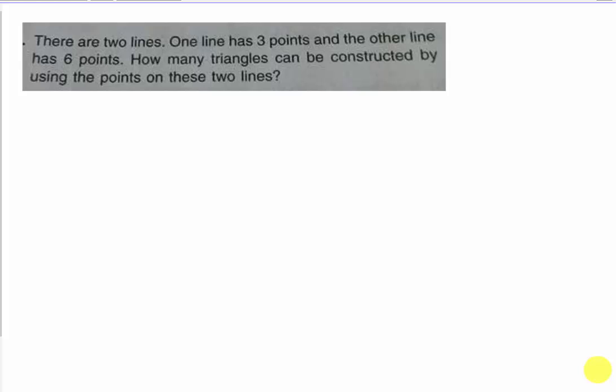Today I'm going to explain this question, which a teacher actually asked me. I find this question is a little bit uncommon — it may be one of the higher order thinking skill (HOTS) questions. So first, after you read the question: there are two lines, one line has three points and the other line has six points. How many triangles can be constructed by using the points on these two lines? This is in the permutation and combination chapter for MF students.